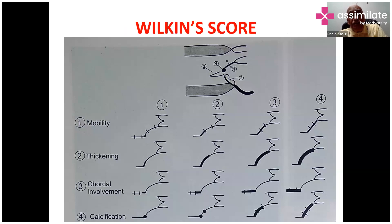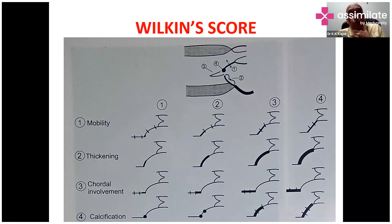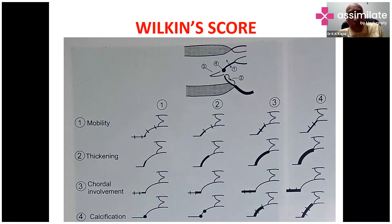This is the Wilkins score, which is used to assess whether the mitral valve is suitable for balloon mitral valvotomy. We look at four aspects: mitral valve thickening, mitral valve calcification, the subvalvular apparatus, and the mobility of the mitral valve — each graded from one to four. A total score of less than eight indicates a good valve for balloon mitral valvotomy.